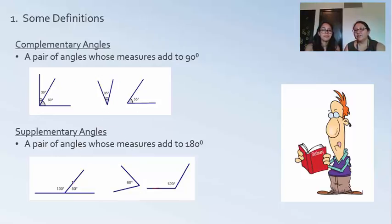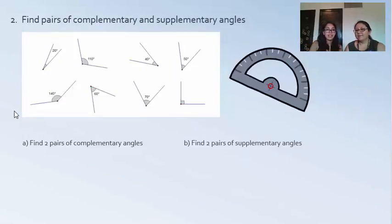For supplementary angles, a pair of angles whose measures add up to 180. These angles are adjacent to each other and they equal 180, but they also don't have to be adjacent to each other. For instance, these angles here would also equal 180. We'll move on to the next slide.